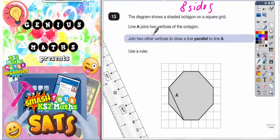Line A joins two vertices of the octagon. Vertices is just a posh word for corners. So this line A is joining two corners of the octagon. It's joining that corner and that corner, or that vertex and that vertex. One corner is called a vertex.